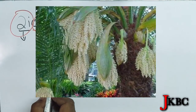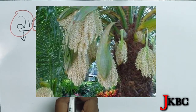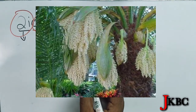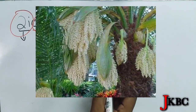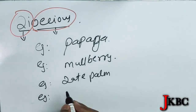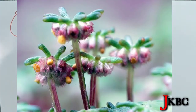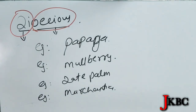The third example is most, most important — Marchantia. All these examples are important because they are written in different places in your NCERT. So write in your NCERT: what is monoecious, what is dioecious.